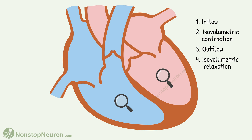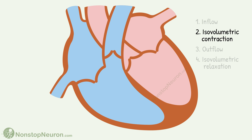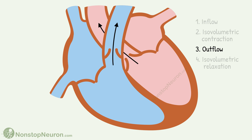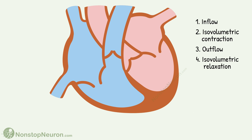When seen from the viewpoint of ventricles and the position of valves, there are four phases of the cardiac cycle. Phase 1 is inflow — inlet valves are open and outlet valves are closed. Phase 2 is isovolumetric contraction — all valves are closed and ventricles are contracting but there is no flow of blood. Phase 3 is outflow — outlet valves are open and inlet valves are closed. Phase 4 is isovolumetric relaxation — again all valves are closed, but this time ventricles are relaxing and there is no flow of blood.